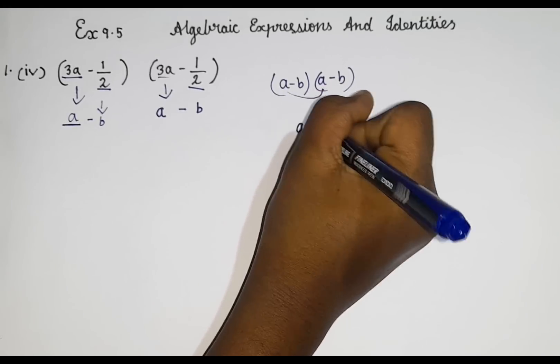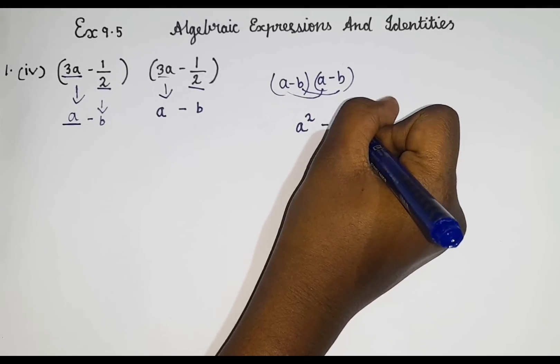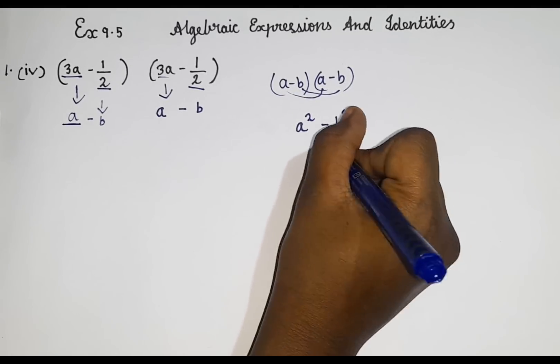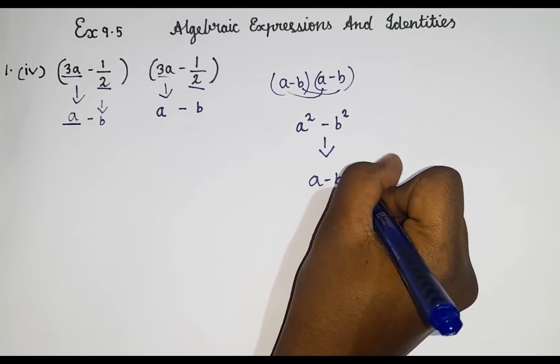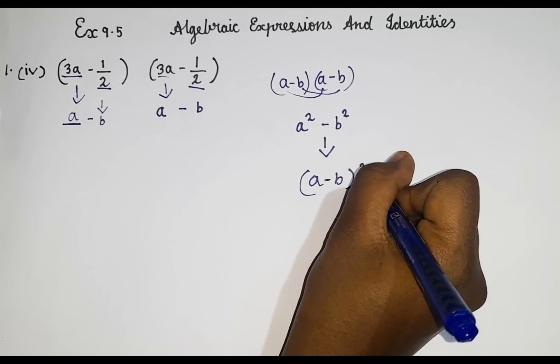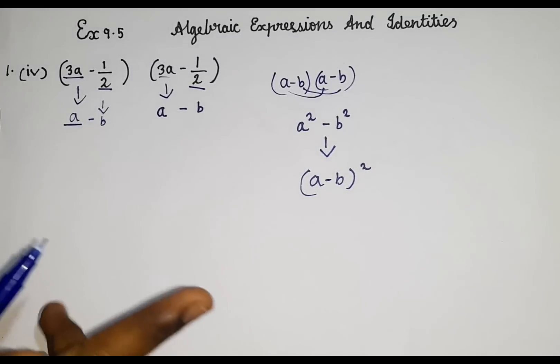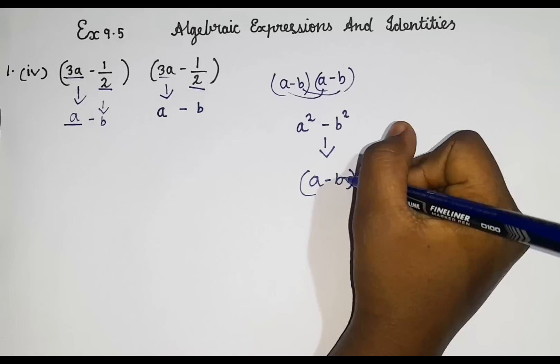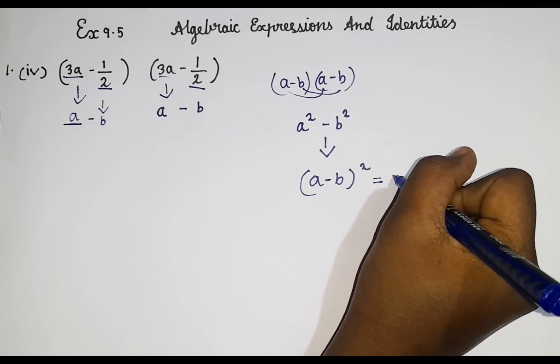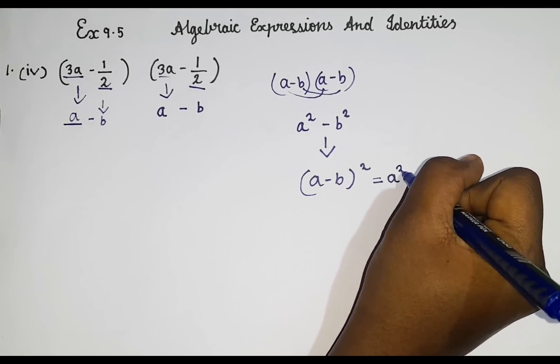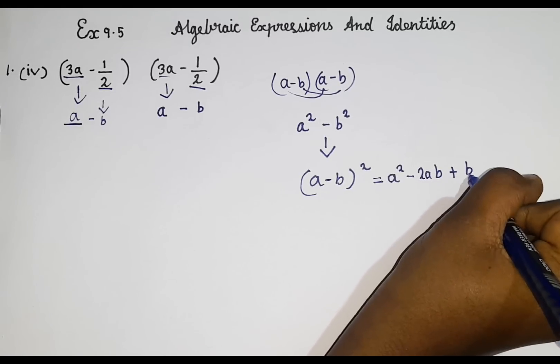So we can also write it as a minus b the whole square. So now you guys might know which identity is this. It is the second identity. So the identity is a minus b the whole square is equal to a square minus 2ab plus b square.